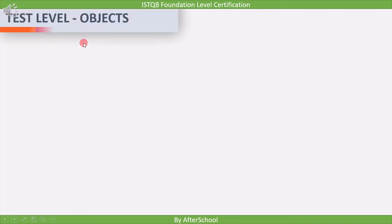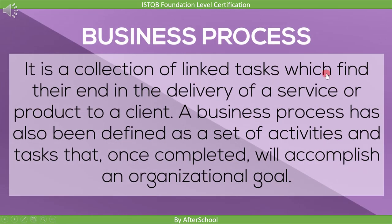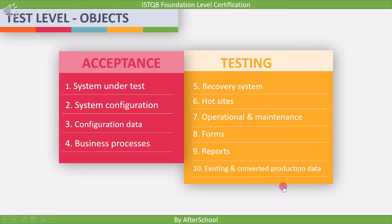Now let's see the test objects of acceptance testing. The first objects are system under test, and system configuration and configuration data. Next is business processes for a fully integrated system. A business process is a collection of linked tasks ending in the delivery of a service or product to a client — a set of activities and tasks that accomplish an organizational goal. Next are recovery systems and hot sites, used for business continuity and disaster recovery testing. These specify how systems shall recover during a software crash or disaster, and how new updates will be installed.